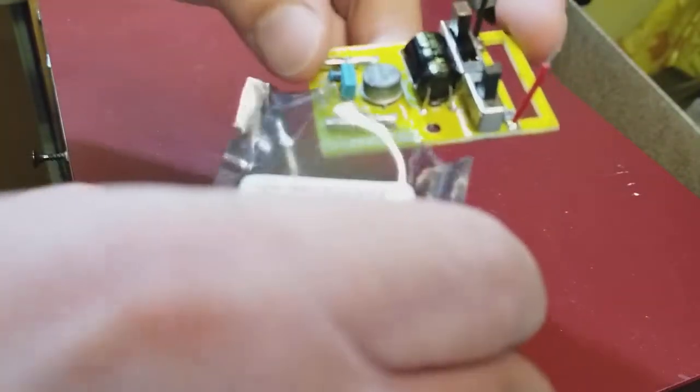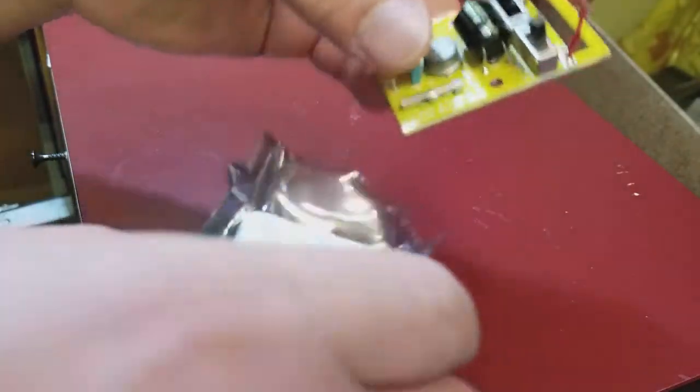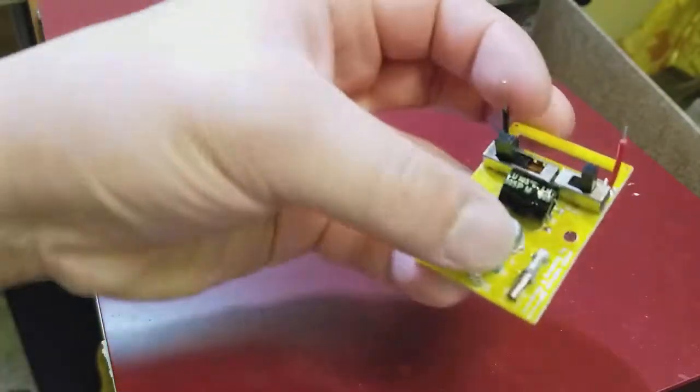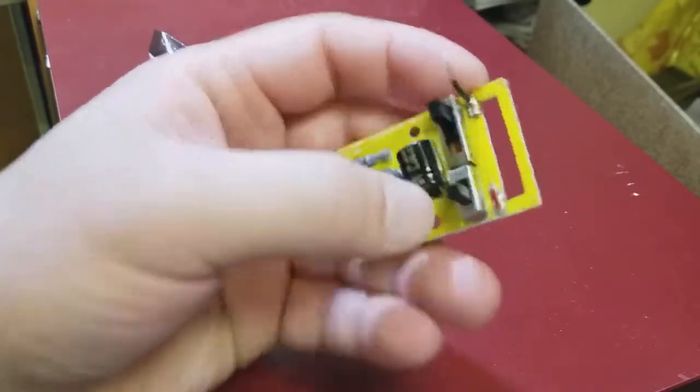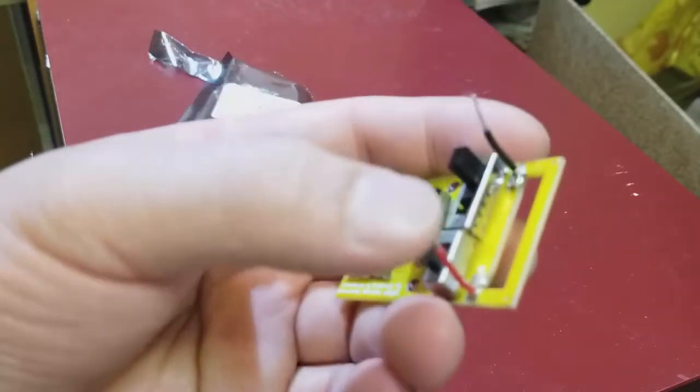That's all it came with, this board in the anti-static bag. That's it. And I just soldered the two solid copper wires here. These are 22 gauge solid copper wires.